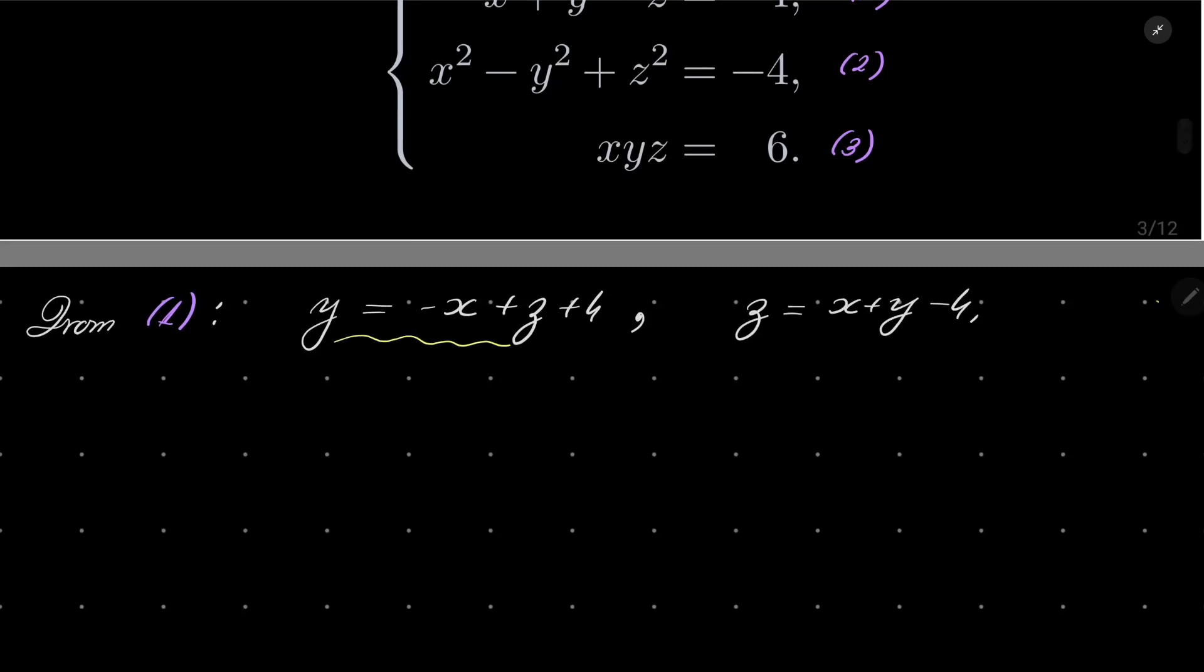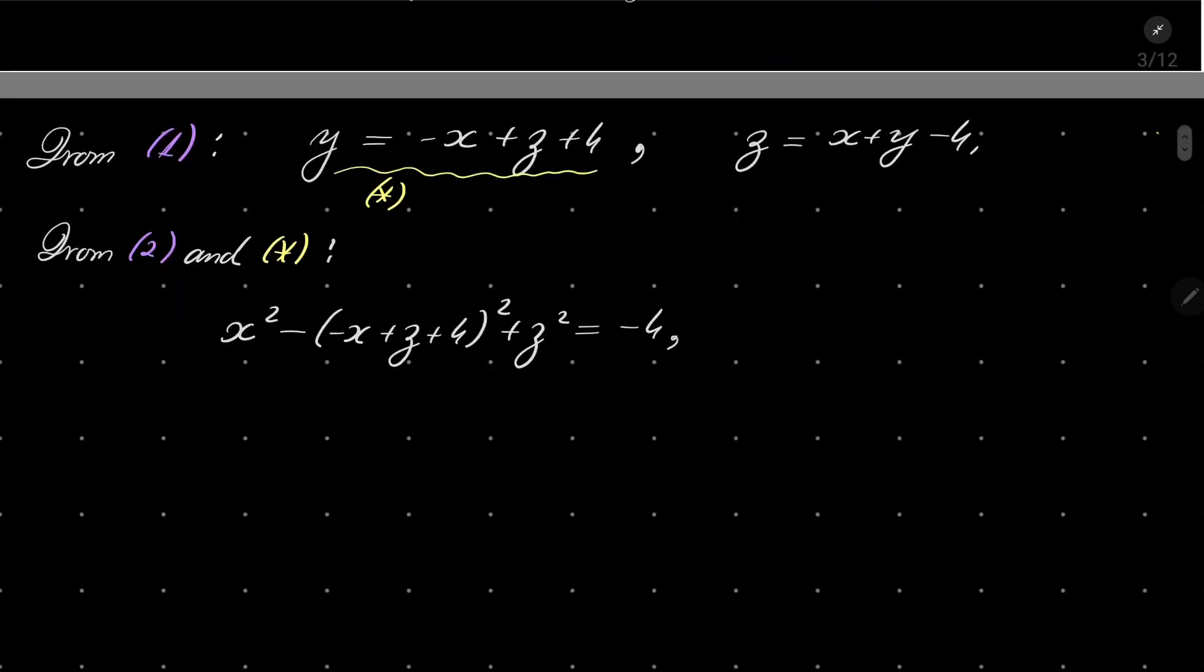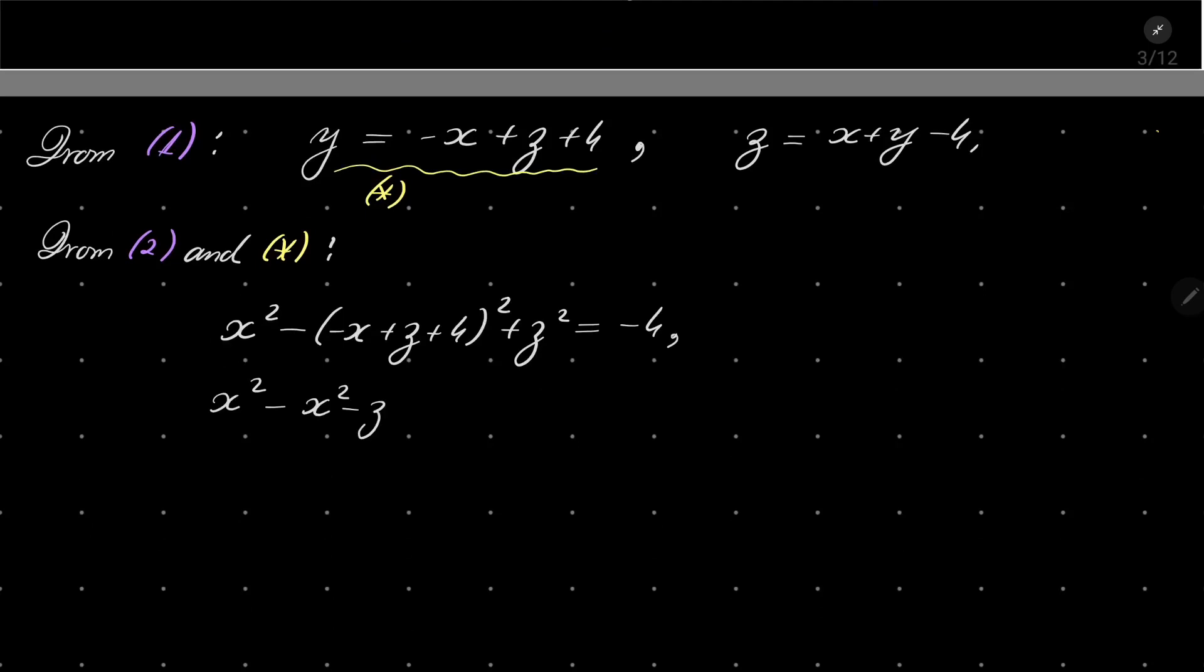I will take this equation and set it into my second equation. So from equation 2 and this equation, which I mark asterisk, we have x squared minus y squared, so minus x plus z plus 4 squared, plus z squared equals minus 4. Simplifying, it's x squared minus x squared minus z squared minus 16 plus 2xz, plus 8x minus 8z plus z squared equals minus 4.